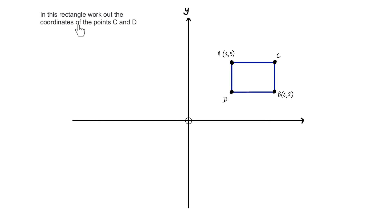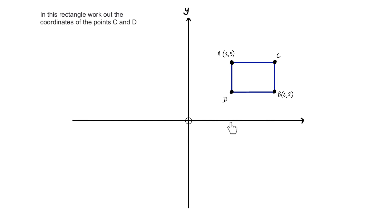In this rectangle, work out the coordinates of the points C and D. We have been given a rectangle but not the scale on the axes, so we must use the coordinates given to infer them. Point A is (3,5): along the corridor it is at 3, so we write 3 on the axis, and up the stairs it is at 5, so we write 5. Point B is (6,2): along the corridor it is at 6, and up the stairs it is at 2.